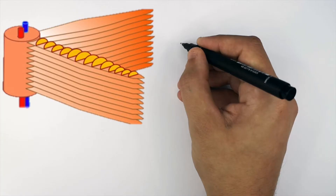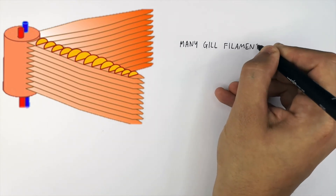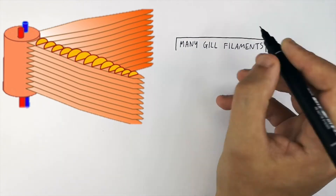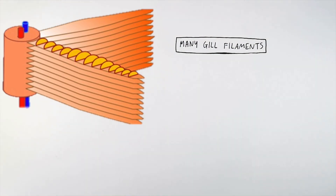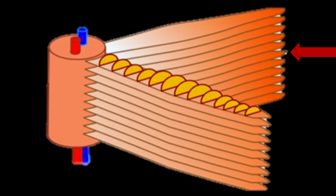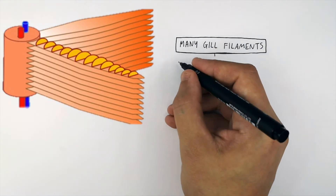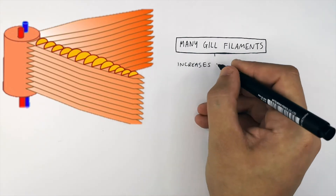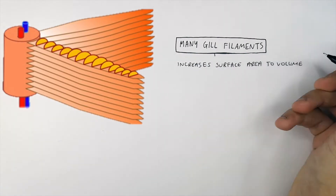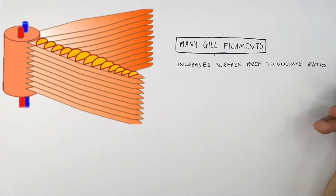This here is a three-dimensional gill. As you can see, the gill is made up of many gill filaments which are stacked on top of each other. These are all gill filaments where the arrow is pointing to. Each of these gill filaments acts to increase the surface area to volume ratio of the gills.